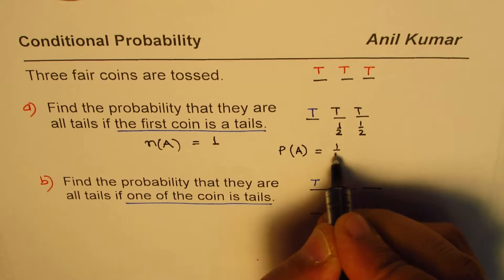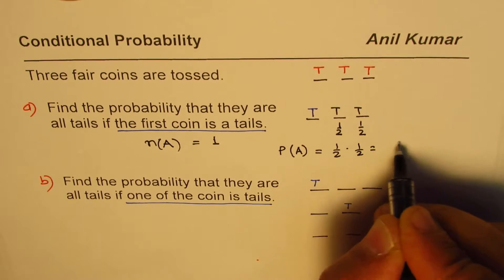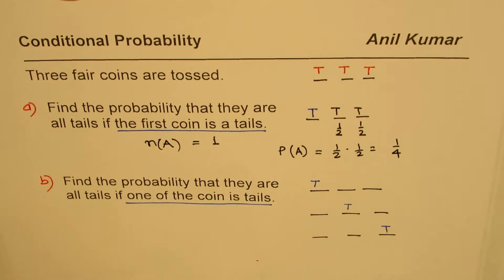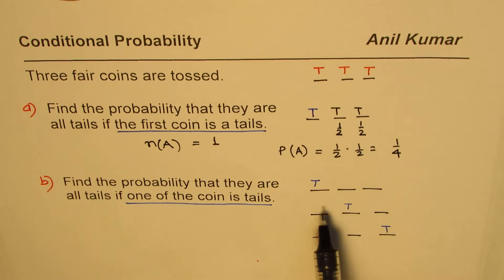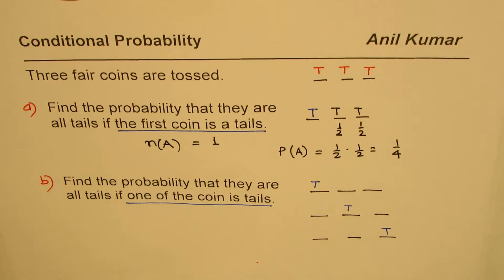Therefore we know that the probability of tossing a tail for this particular event is half times half, which is one over four. So that is how we can actually get our answer directly.